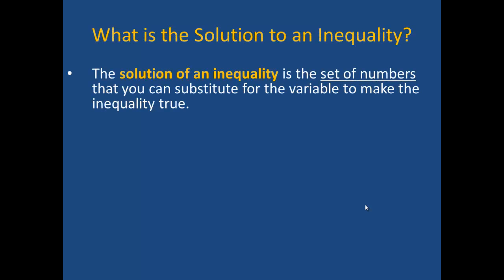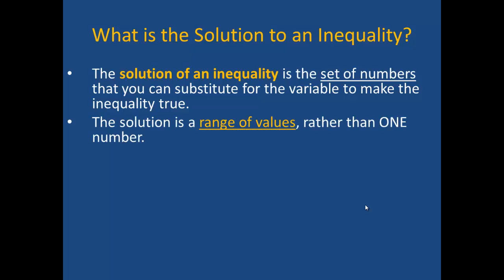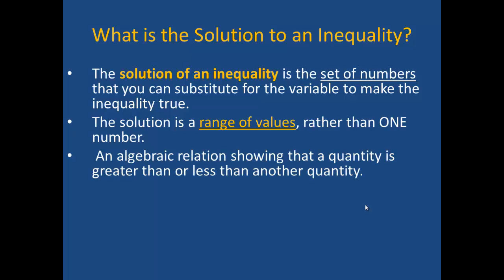The solution of an inequality is a set of numbers that you can substitute for the variable to make the inequality true. It is actually a range of values, not just one number. It is also an algebraic relation showing that a quantity is greater than or less than another quantity. For example, in real life, we might think about the speed limit on a highway — we can drive greater than or equal to 45 miles an hour as long as it is less than or equal to 70 miles an hour.